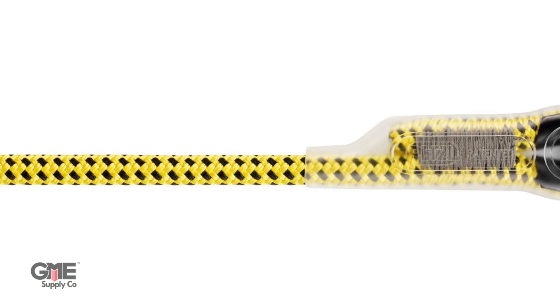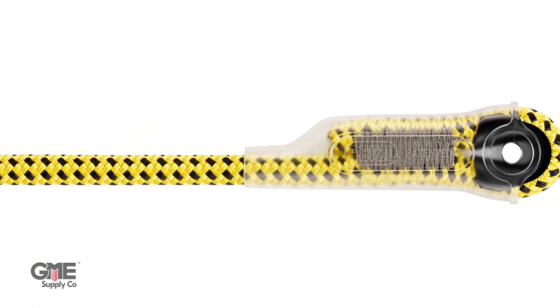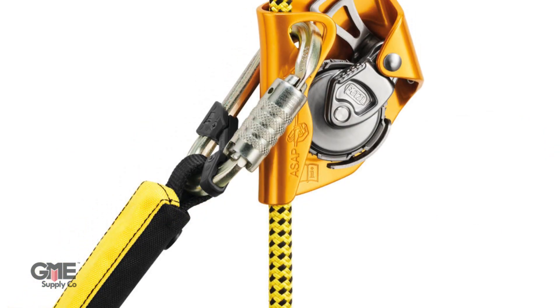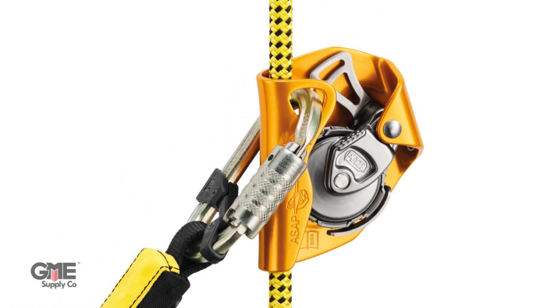Finally, we need a lifeline. Petzl's Ray 12 millimeter rope is a low stretch kern mantle that, when used with the ASAP lock and ASAP absorber, meets ANSI Z359.15. It's constructed to provide consistent performance in any condition, making it ideal for vertical lifelines, and it features SONI termination to keep connectors in place.